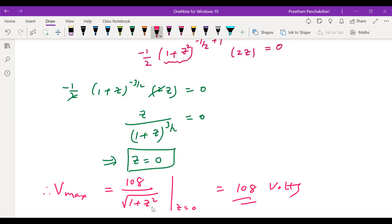Without this mathematics also we can understand that since z is in the denominator, the smallest value of z can make the V maximum. So smallest value that is possible in this case is 0. So we can get 108. So that is the solution for this problem.